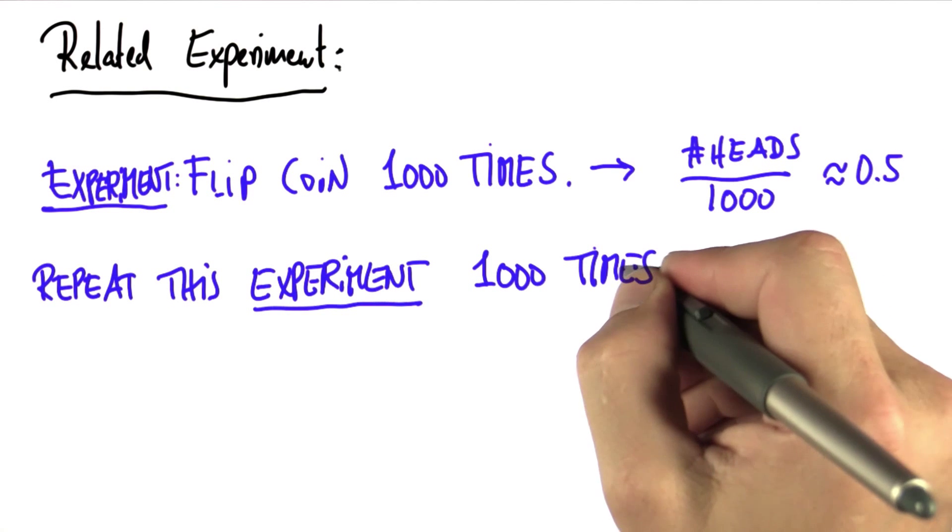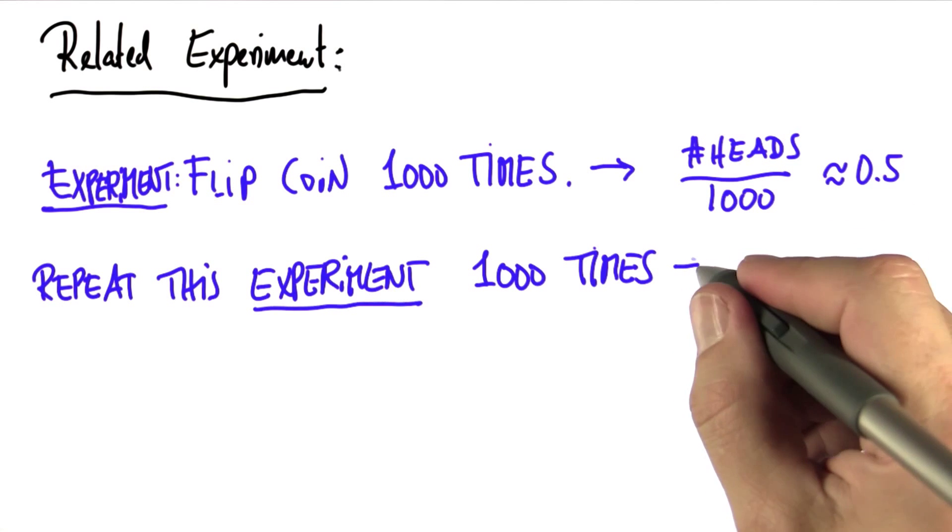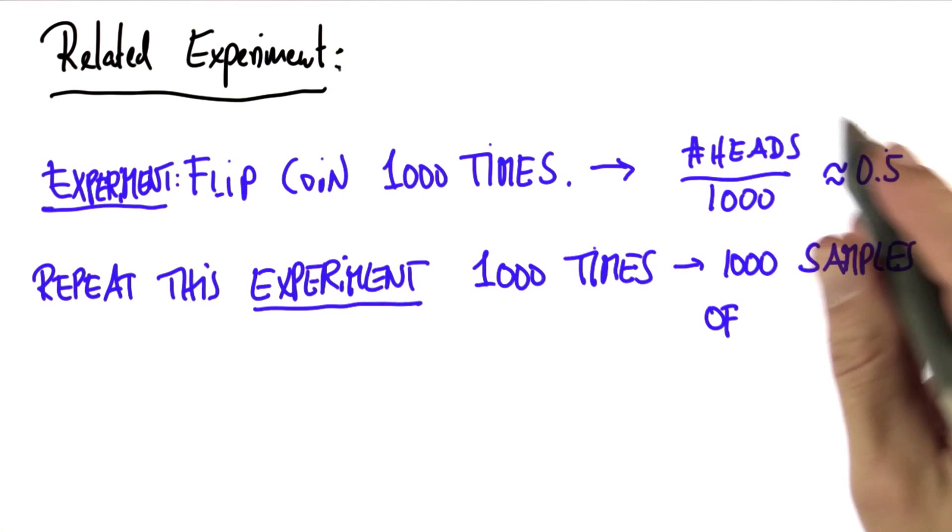I repeated this experiment 1,000 times, and that means I got 1,000 samples of this ratio over here.